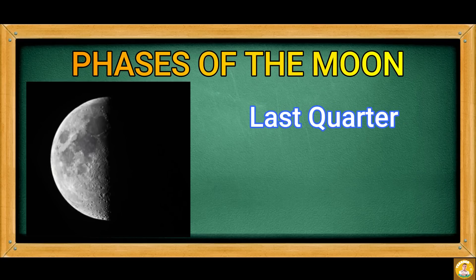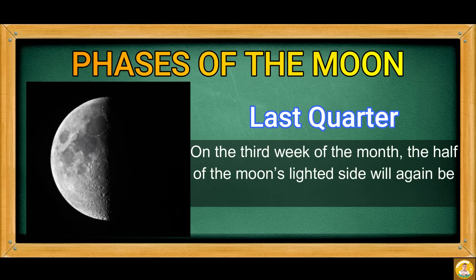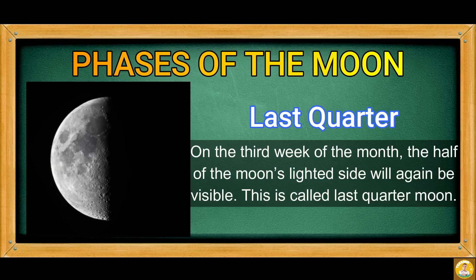Last Quarter. On the third week of the month, half of the moon's lighted side will again be visible. This is called the last quarter moon.